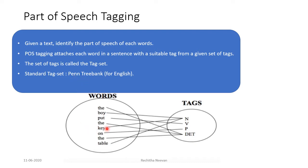This picture represents the action of a part-of-speech tagger. 'The' is a determinant. 'Book' is a noun. 'Put' is a verb. 'The' is a determinant. 'He' is a noun. 'On' is a preposition. 'The' is a determinant. 'Table' is a noun. So our input is a set of words and the output is a set of tags corresponding to each word.